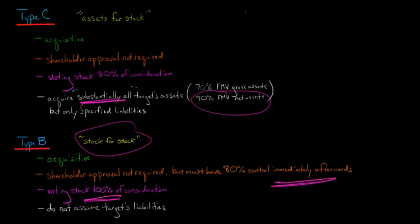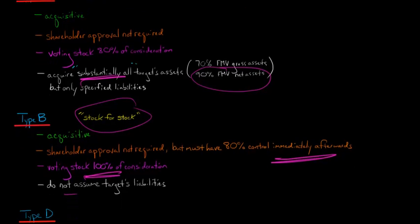You don't need shareholder approval, but you have to have at least 80% of the control of the target immediately afterwards. That 80%, you could get that over time through creeping acquisitions. But when it's all said and done, you have to have at least 80% of control immediately afterwards. The good news is, even though there's a strict requirement about having to do 100% voting stock, you do not have to assume the target's liabilities.